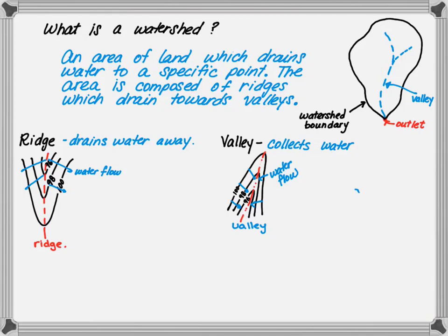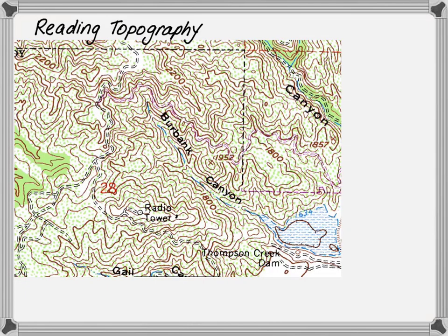Now pause the video. Can you pull out your Burbank Canyon topographic map located in the Blackboard management system? If you don't have access to it, you can pull up another 7.5-minute topographic map. It's really important that you understand how to read topographic maps. There are very few people in the world that can look at a 2D map like this and see 3D valleys, ridges, and high points. Having the map in color does help, but most people need to practice to understand maps.